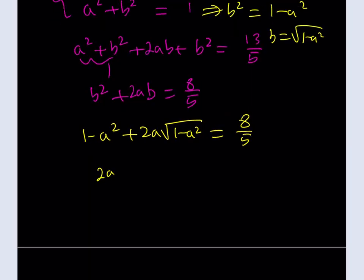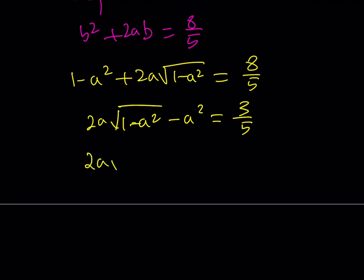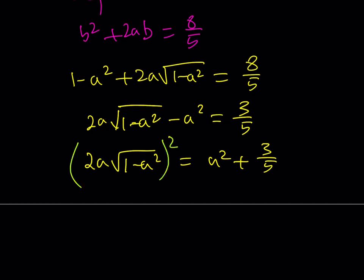If I subtract 1 from both sides, 8 over 5 minus 5 over 5 is going to be 3 over 5. And now what I'd like to do is isolate the radical here and square both sides. If I do that, I'll be getting something nicer. Let's go ahead and see how that goes.